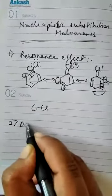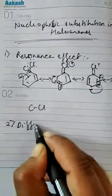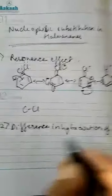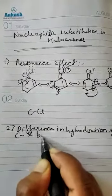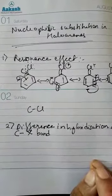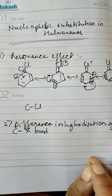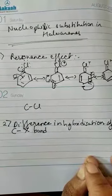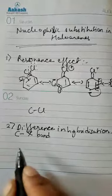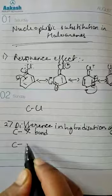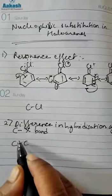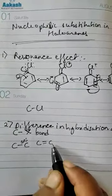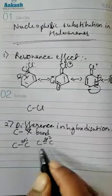The next reason is the difference in hybridization of the carbon–halogen bond. In haloalkanes, the carbon atom attached to the halogen is sp3-hybridized, while in haloarenes the carbon atom attached to the halogen is sp2-hybridized. As you studied in class 11, if a carbon is singly bonded to another atom it is sp3-hybridized, and if it is bonded through a double bond it is sp2-hybridized.